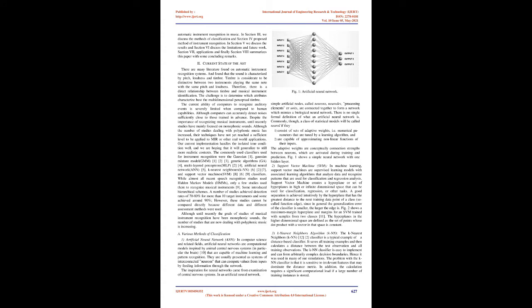Various Methods of Classification. Artificial neural network: in computer science and related fields, artificial neural networks are computational models inspired by animal central nervous systems, in particular the brain, that are capable of machine learning and pattern recognition. They are usually presented as systems of interconnected neurons that can compute values from inputs by feeding information through the network. The inspiration for neural networks came from examination of central nervous systems.